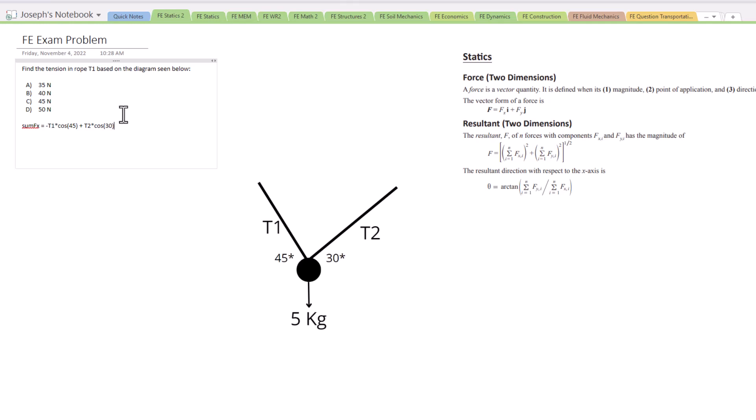So if we go sum of the forces in the y direction this time, well, we have that 5 kilograms going down. Now remember, that's just kilograms, not necessarily newtons or force. So we need to times that by 9.81, which is the value for gravity. That'll get us the newton value.